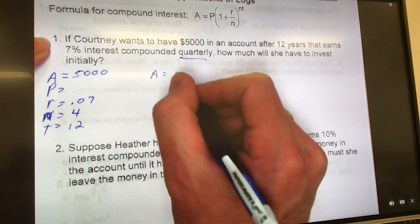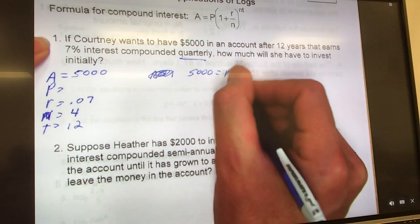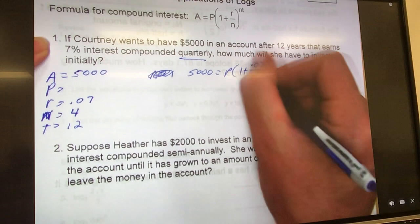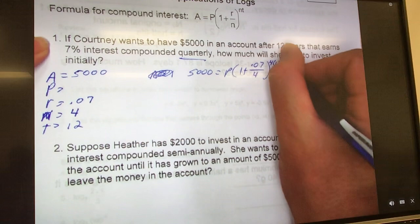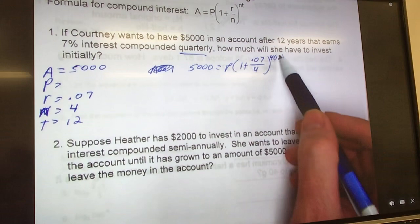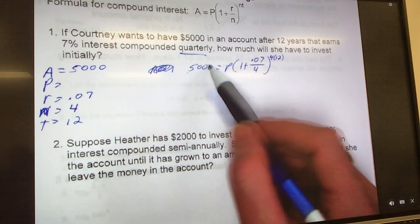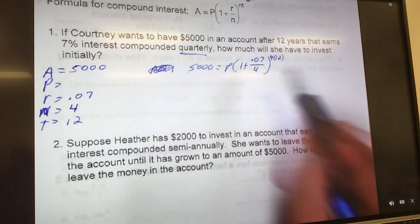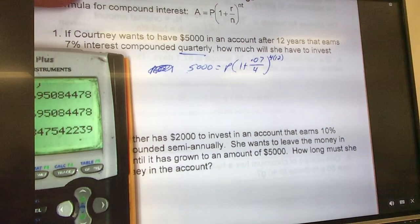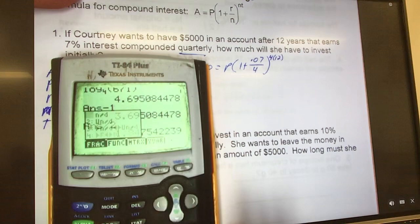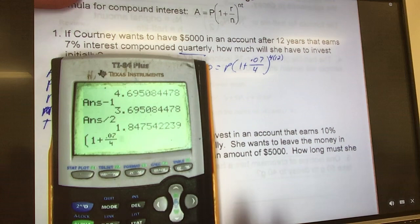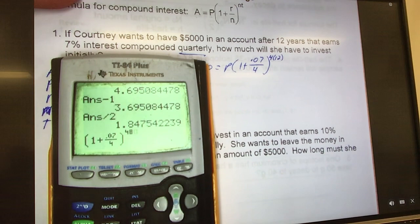A equals, oh, let's not do that. Okay, $5,000 equals P times 1 plus R, which was 0.07, over N, which is 4, all raised to the N, which is 4, times time, which is 12. So all I'm going to do on this one, super easy, I'm solving for P, so I'm going to take this, divide it under this. So whatever this comes out to, I'm going to divide $5,000 by it. So we can go ahead and put this part in our calculator.